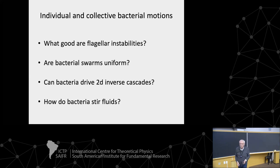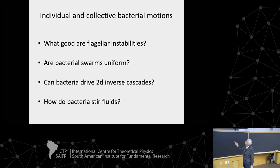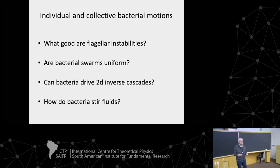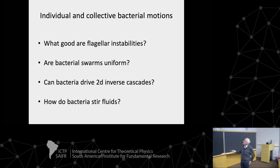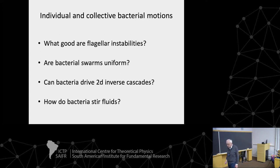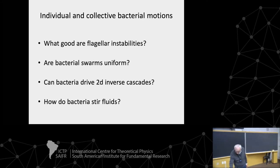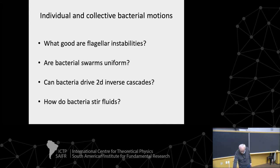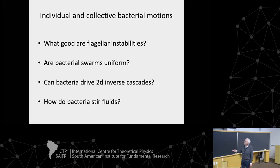By way of summary: the three parts covered are the flagellar mechanical instabilities and their role in bacterial motility; the analysis of heterogeneity in bacterial swarms using high-resolution movies; and the theoretical model suggesting we are very close to observing the 2D inverse cascade and turbulence condensate also in experiments. There was a fourth part on anomalous diffusion of tracers that had to be skipped. Thank you very much.